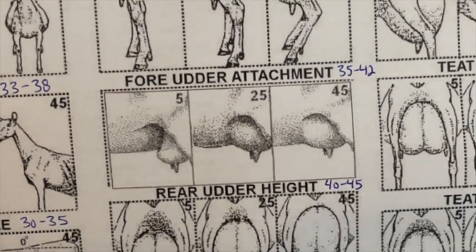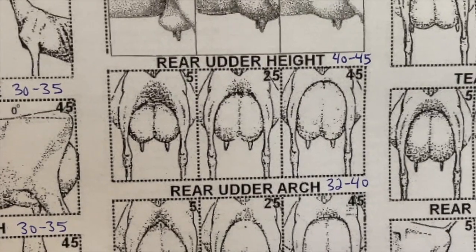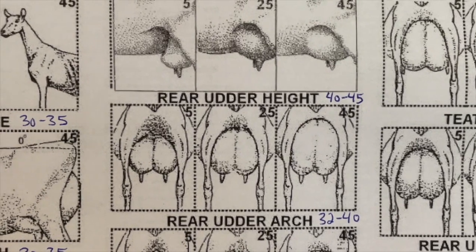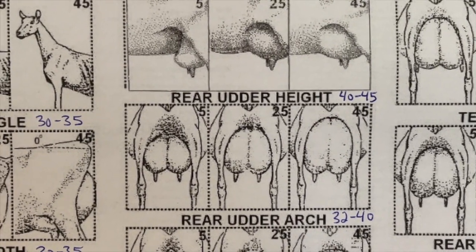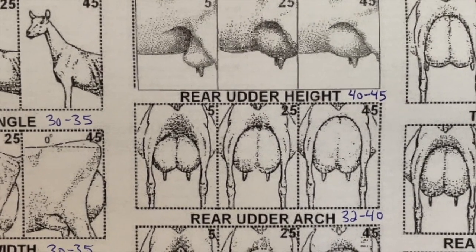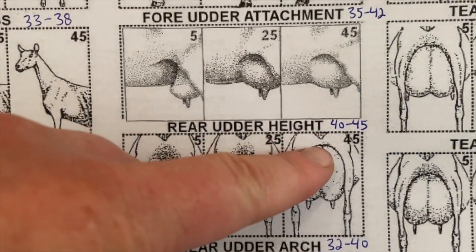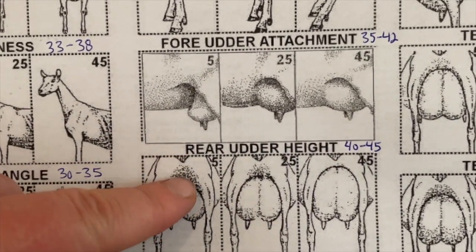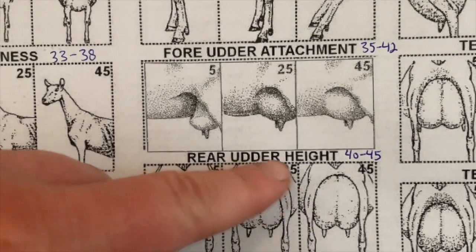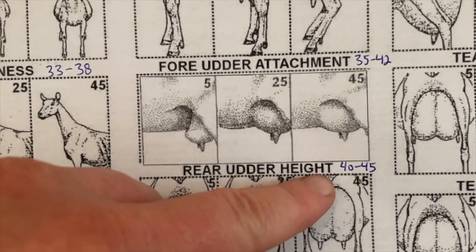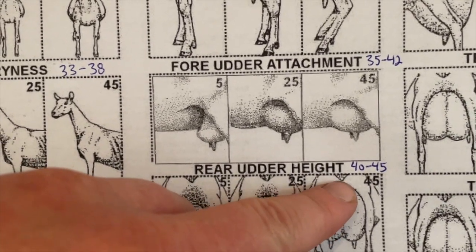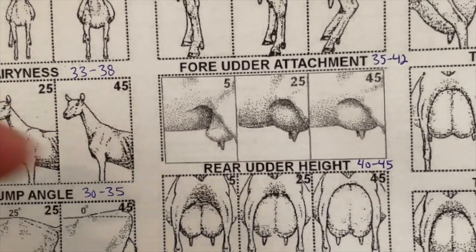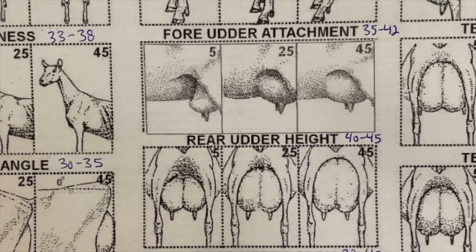For rear udder height, what we really want is an udder that is as high up into the vulva as possible, with as little fleshing between the bottom of the vulva and the top of the udder as possible. You can see how much flesh there is at lower scores and almost none at the higher scores. We're going for a higher point range of about 40 to 45 — when you see that, it's kind of jaw-dropping.